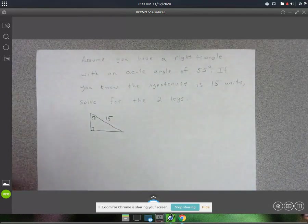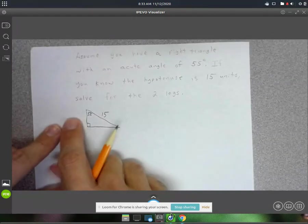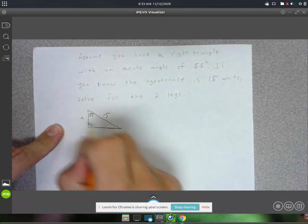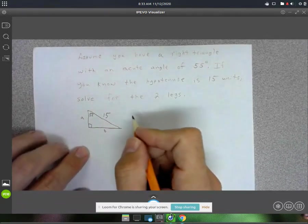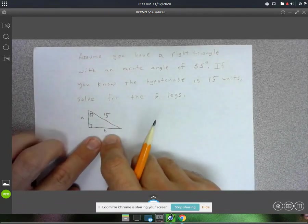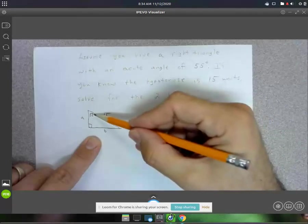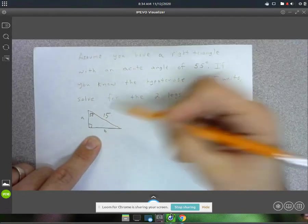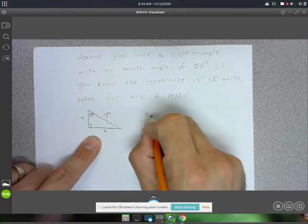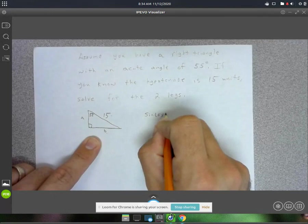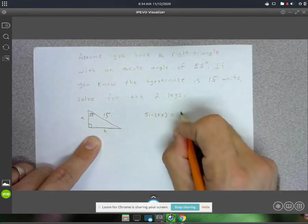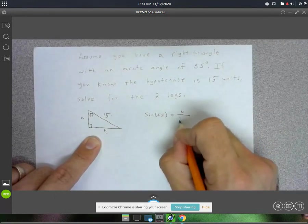Okay, so to solve for—we'll just call this A and B here. Alright, so to solve for B, I could use sine of 55, because sine is opposite over hypotenuse. So I can do sine of 55 is equal to opposite over hypotenuse.